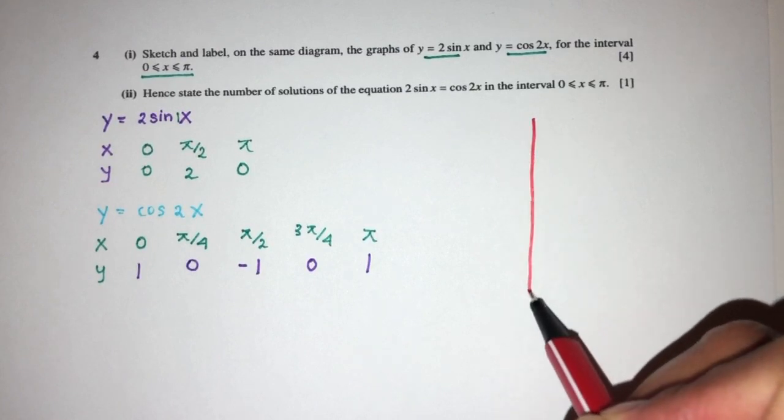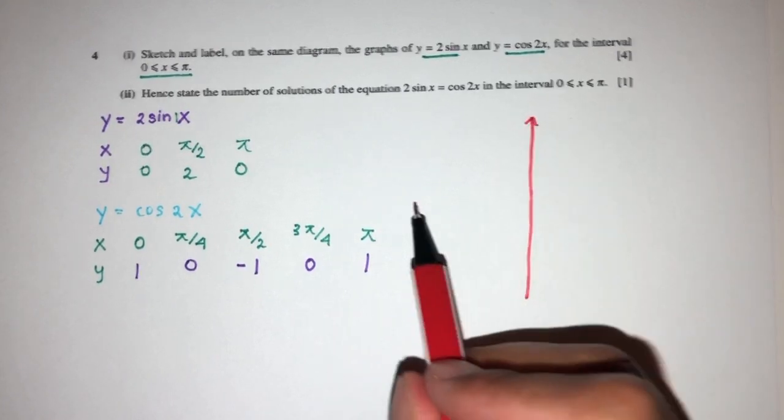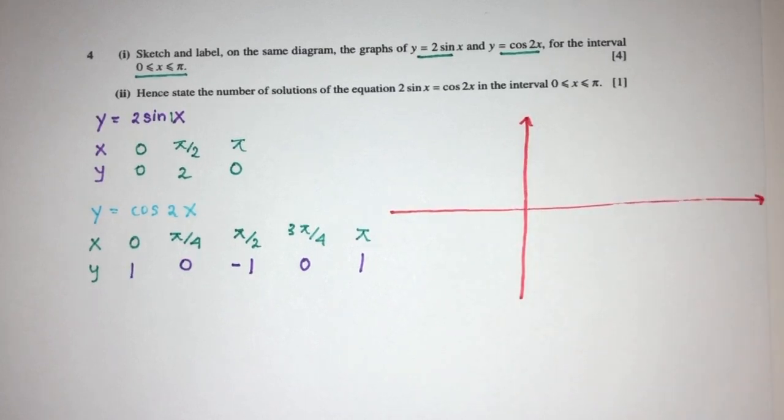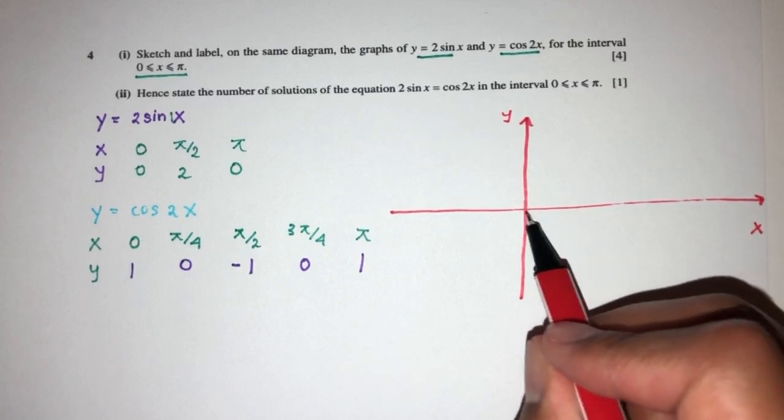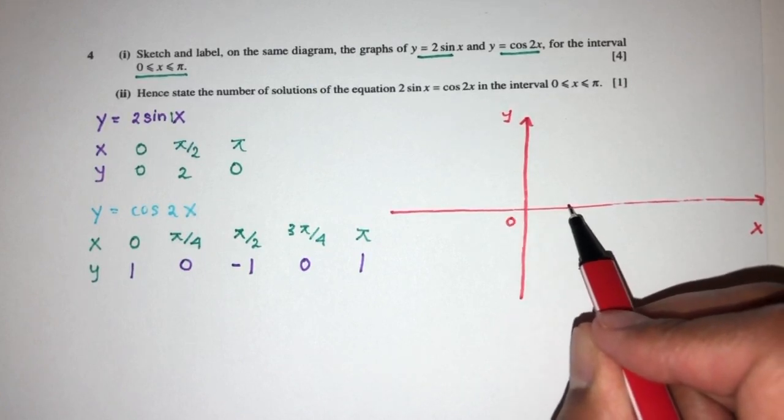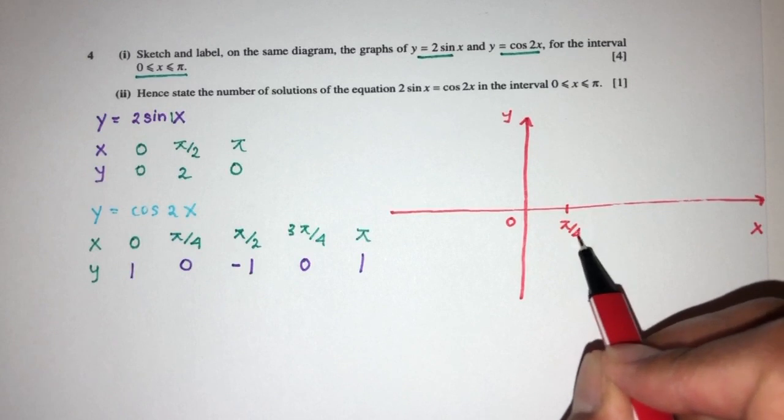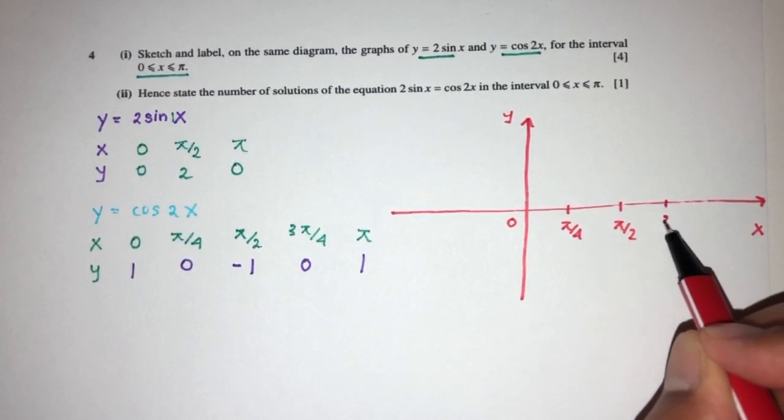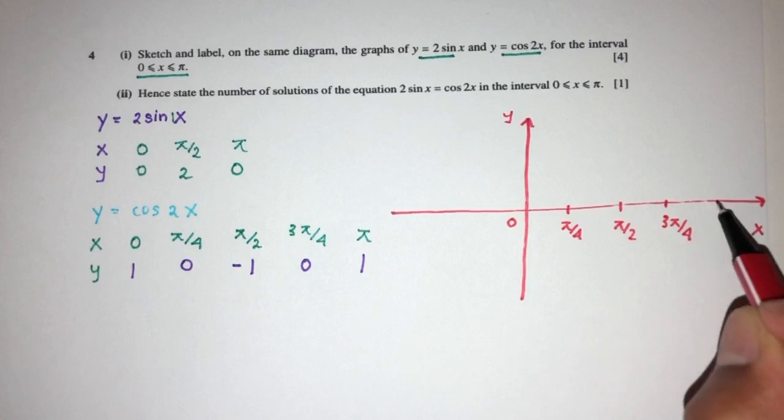This is the y-axis. Of course you will be using a ruler. So here we have y. Here we have the values of x. So here I have 0. Let's say here we have π/4, π/2, 3π/4, and finally π.